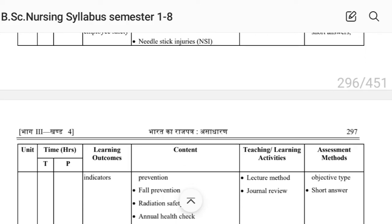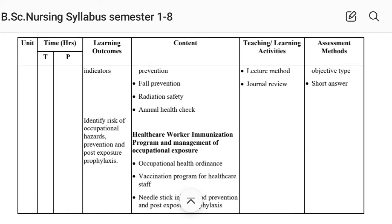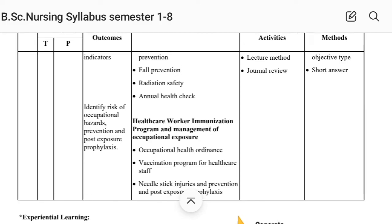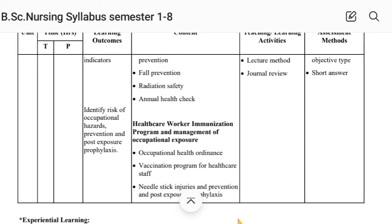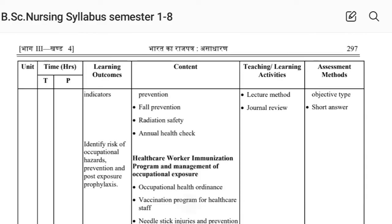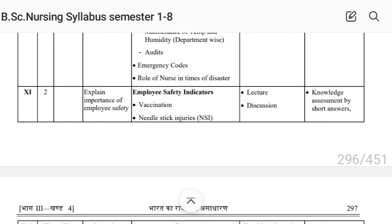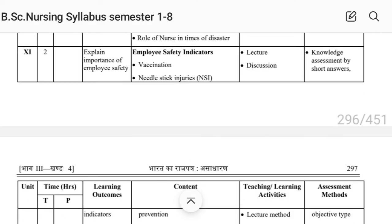Unit Eleventh covers healthcare worker immunization program and management of occupational exposure. Section B — Infection Control Including Safety — has a total of 11 units included in the syllabus.